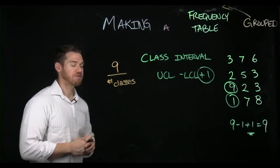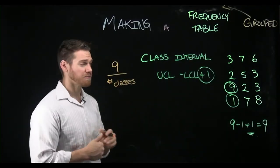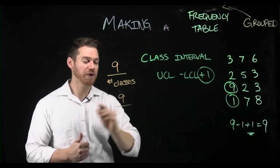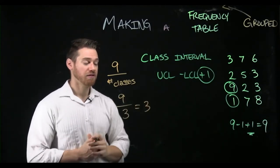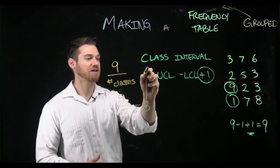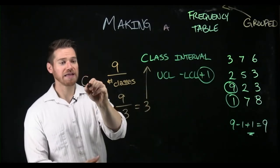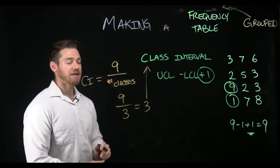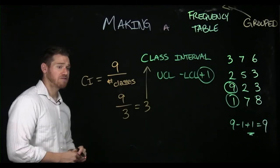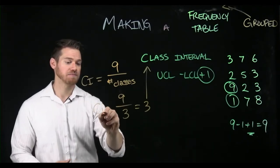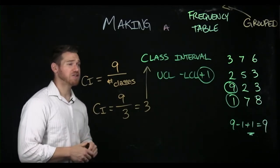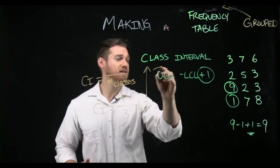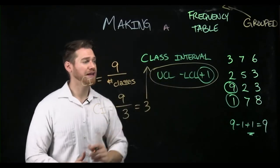We're doing a grouped frequency table here by making these classes. I have a real range of nine, I want to make three classes, that is going to give me three for the size of my class interval. The class interval or class width is the real range of your data divided by the number of classes. Here we're going to make each of these three wide, remembering that the width is the upper minus the lower plus one.